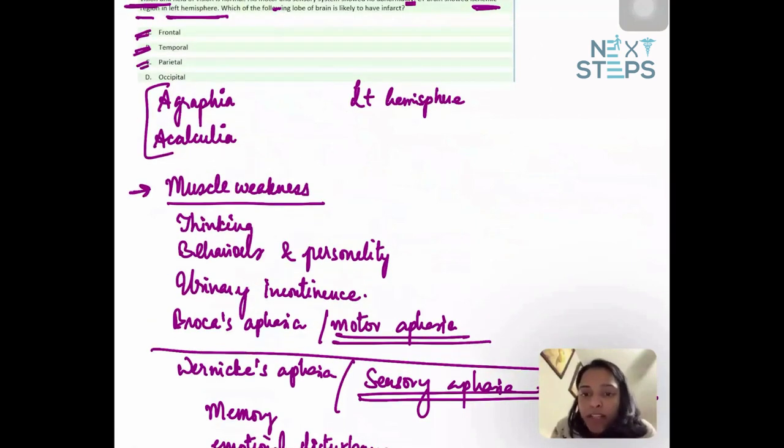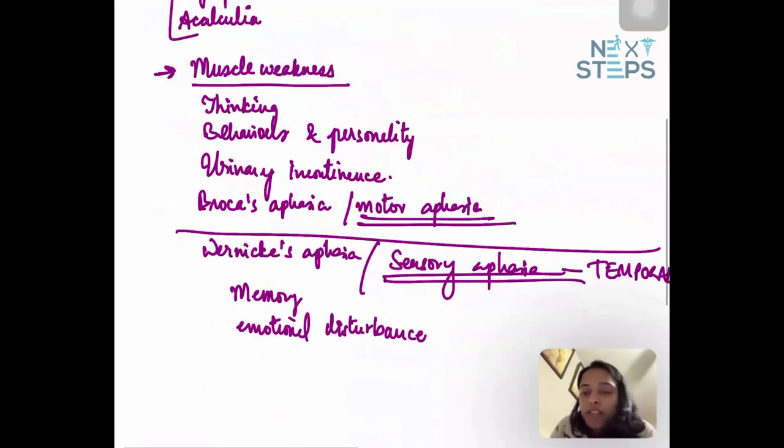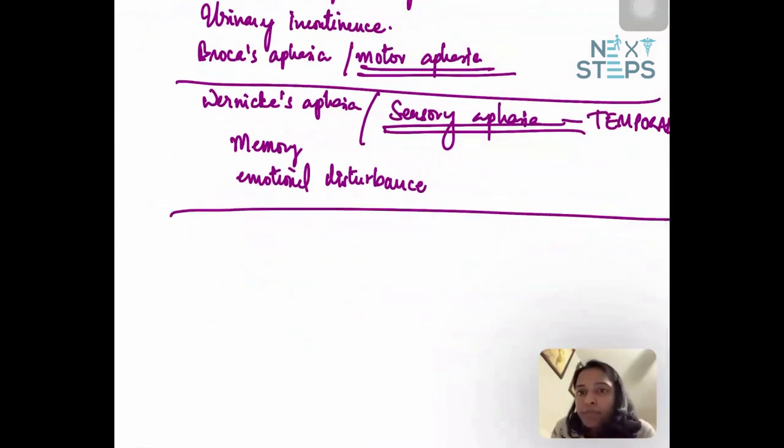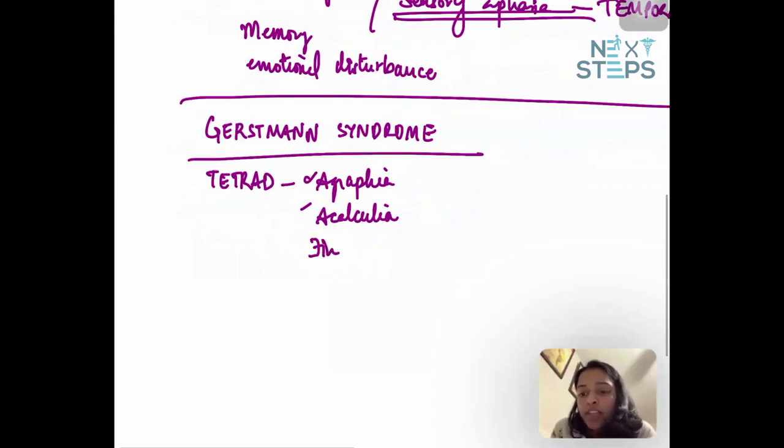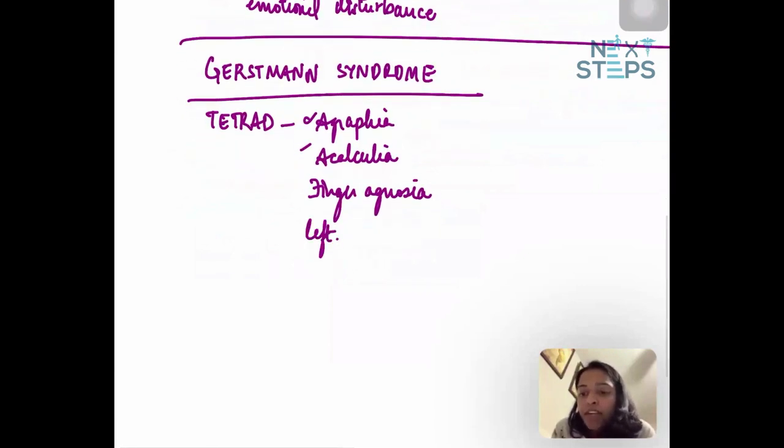The next option is parietal lobe infarct. This is the answer in our question because there is a syndrome called Gerstmann syndrome - you have to remember this, there is no other way. Gerstmann syndrome is characterized by a tetrad of agraphia, acalculia - these two are seen in our patient as well - finger agnosia, so they'll not be able to recognize their fingers, and left-right disorientation. The point here is patients who have an infarct in the dominant parietal lobe - so in left-handed people it is right-sided lobe, and right-handed people it is left parietal lobe.